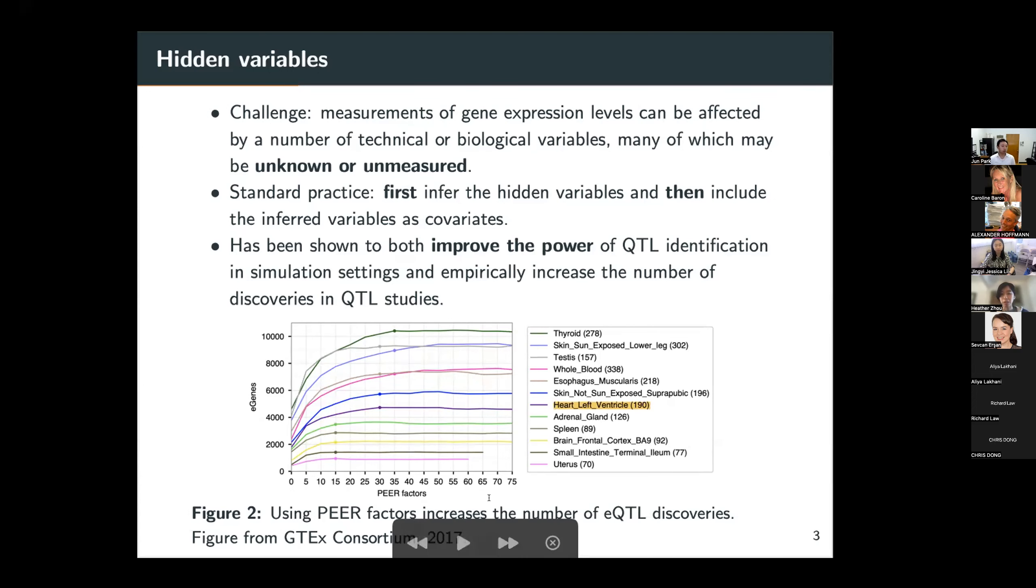So this plot was taken from a recent GTEx consortium paper, where they published results about EQTL and SQTL analyses. The x-axis shows how many PEER factors they include in their QTL pipeline, and the y-axis shows the number of e-genes, or we can understand it as the number of discoveries they make from the data set. If we look at one line, which corresponds to one tissue type, the number of discoveries increases quite significantly